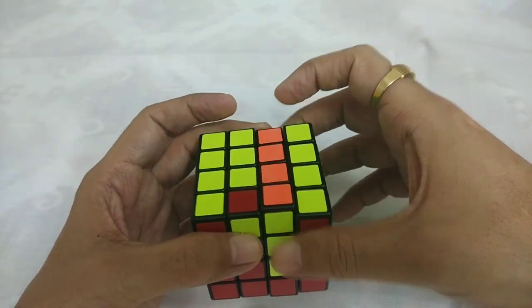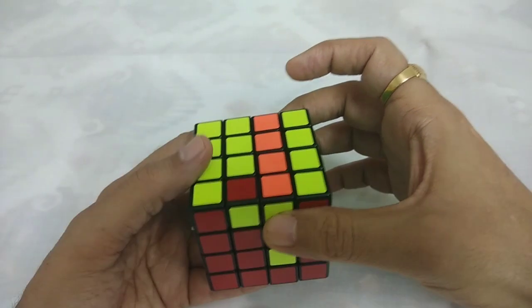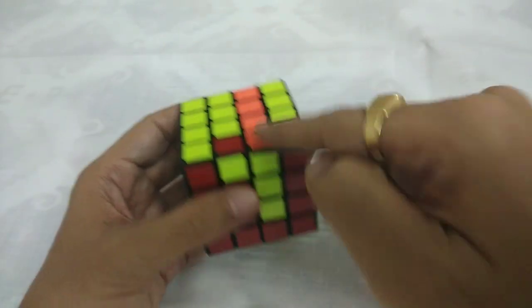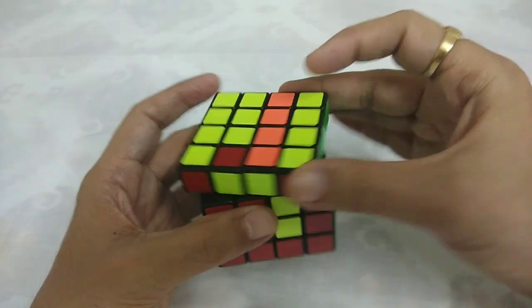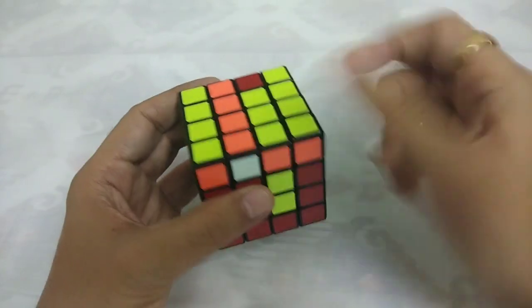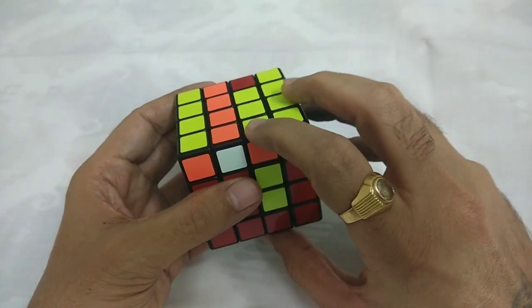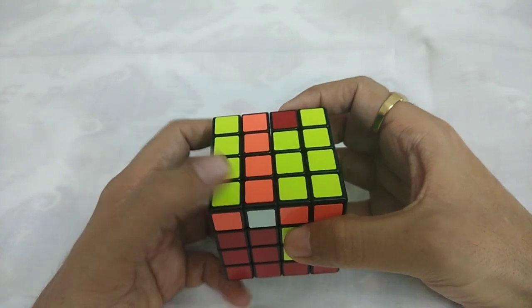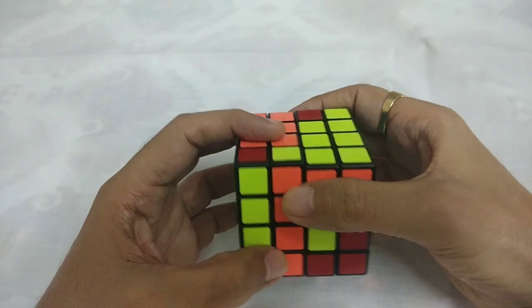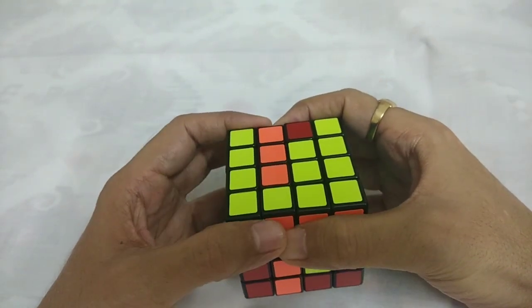So R prime, middle R prime, so we moved here. So now we have to do 2U. Now we have to move this left. So L, middle L.